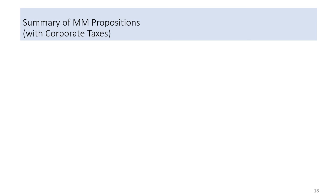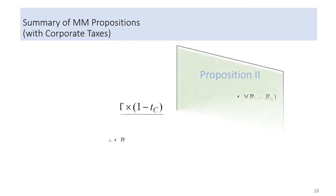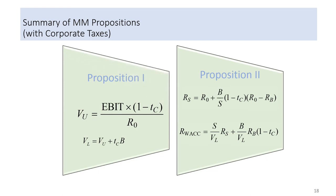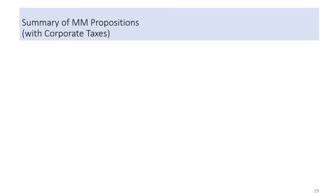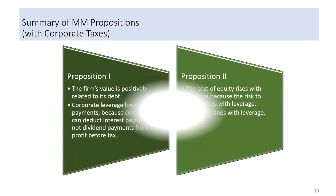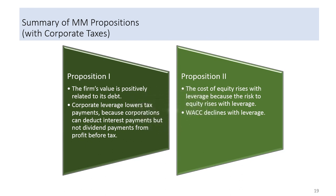Finally, we have come to the end of this video. Before I end, I would like to summarize the key formulas for MM Proposition 1 and 2 in a world with corporate taxes. I hope this will enhance your learning when you can visualize all the formulas in one slide. However, knowing the logic and theory behind the formulas is equally important — if you cannot remember the formula in future, you can still reason out the calculation with logic and knowledge. Here is the summary of key content: Proposition 1 focuses on value of firm, and Proposition 2 includes cost of equity and weighted average cost of capital.